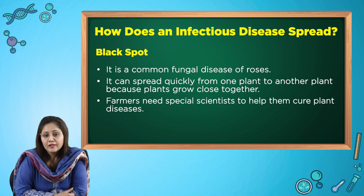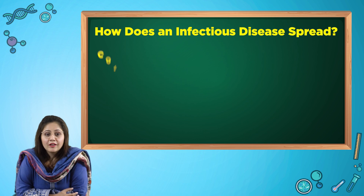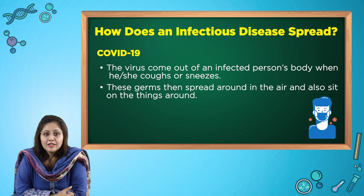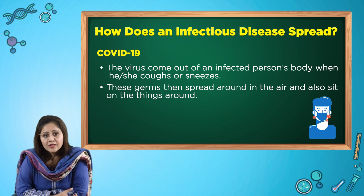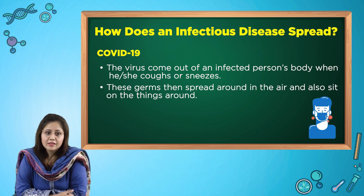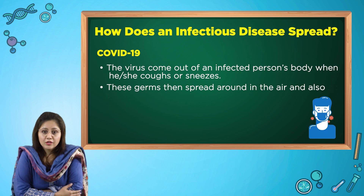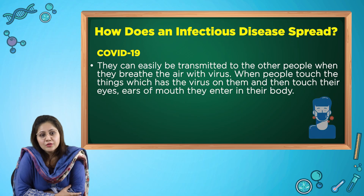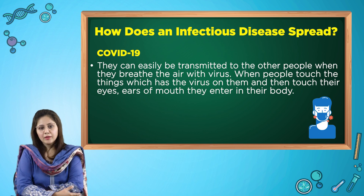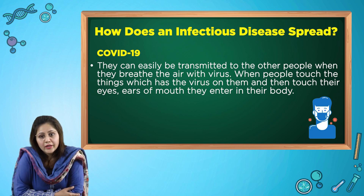Farmers need special scientists to help them cure plant diseases. Now let's talk about COVID-19, which you all know about — it is also an infectious disease caused by a virus. The virus comes out of an infected person's body when they cough or sneeze. These germs spread around in the air and also sit on things around us. They can be transmitted to other people when they breathe air containing the virus, or when people touch infected surfaces and then touch their eyes, ears, or mouth.